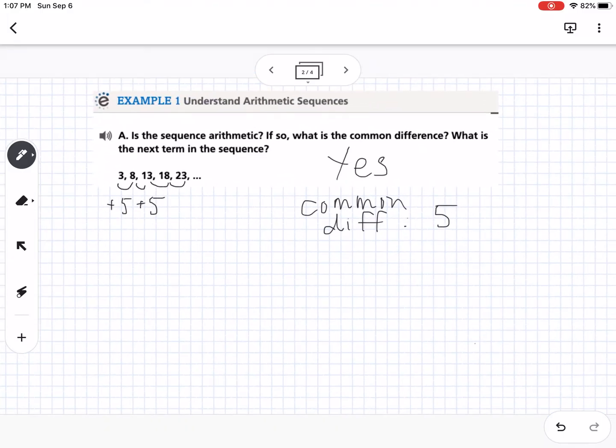The common difference would be 5. If you were subtracting, you would say the common difference would be a negative number. Because we're adding 5 each time, that's where positive 5 comes in. So the next term in our sequence would be 28.